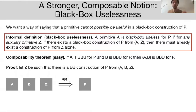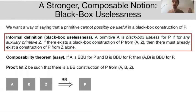What do I mean by composable? The way we define it is as follows. A primitive A is black box useless for P if, given any auxiliary primitive Z, if there exists a black box construction of P from A together with Z, then there must already exist a construction of P from Z alone.